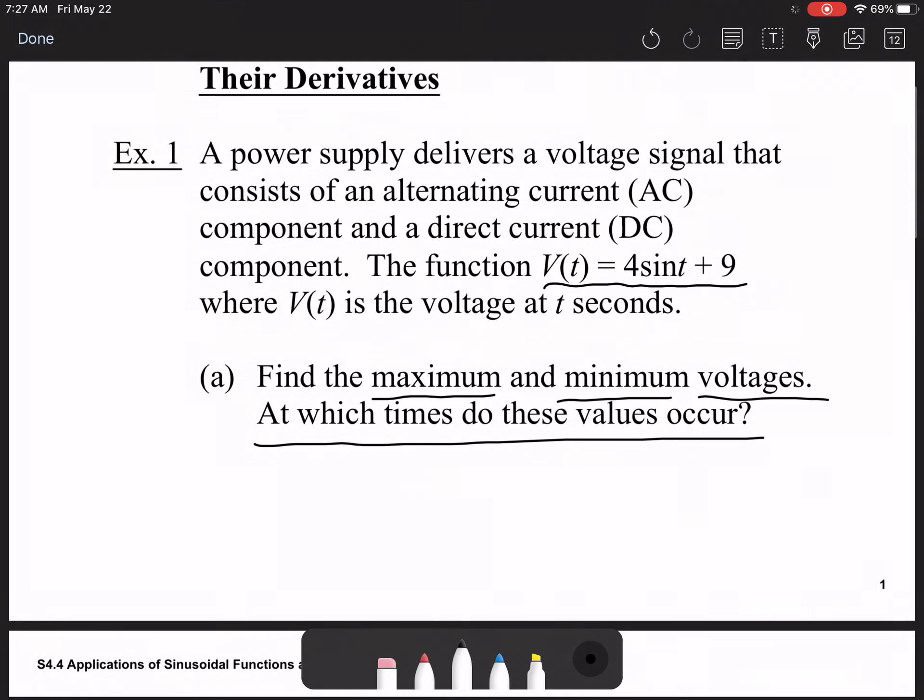To find where the maximum or minimum occurs, we need first the derivative. So V'(t) is equal to 4cos(t). We need to find out when this is equal to 0. This requires you to actually know some stuff about this. So we're going to first divide by 4. We get cos(t) = 0. That means t is equal to the cosine inverse of 0.